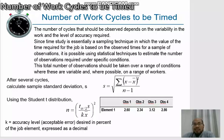Since time study is essentially a sampling technique in which the value of the time required for the job is based on the observed time for a sample of observations, it is possible using statistical techniques to estimate the number of observations required under specific conditions. This is the number of work cycles with time formula N.